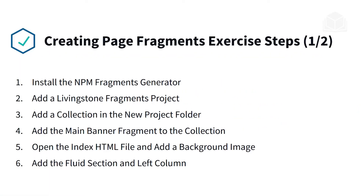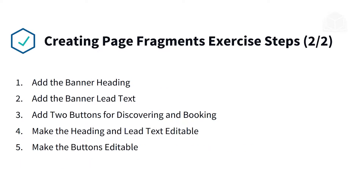First, we'll be installing the npm fragments generator. We'll add a Livingston fragments project and then add a collection in the new project folder. We'll also add the main banner fragment to the collection, open the index.html file and add a background image, add the fluid section and left column, then add the banner heading and banner lead text, add two buttons for discovering and booking, make the heading and lead text editable, and finally make the buttons editable.